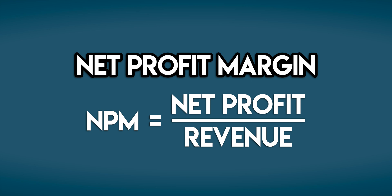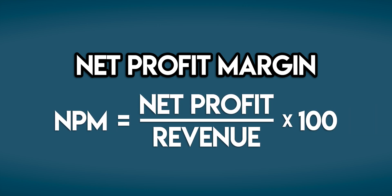Usually, Net Profit Margin is shown as a percentage, so we can multiply this by 100. Before we jump into the example, let's take a moment to refresh ourselves on a couple of things.